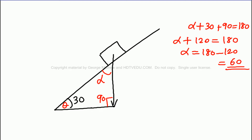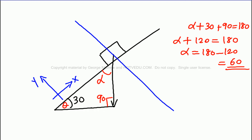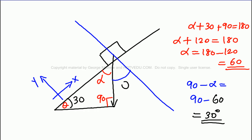Alpha is 60 degrees. Now, with respect to the new so-called vertical axis, the angle that the gravitational force makes is 30 degrees. So whatever angle the inclined plane makes with the horizontal, that is the angle that the gravitational force vector makes with the vertical.